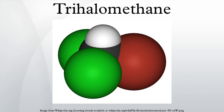Trihalomethanes are chemical compounds in which three of the four hydrogen atoms of methane are replaced by halogen atoms. Many trihalomethanes find uses in industry as solvents or refrigerants. THMs are also environmental pollutants, and many are considered carcinogenic.